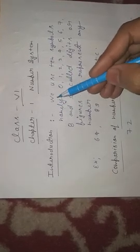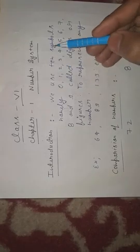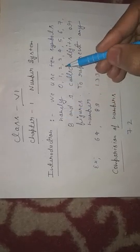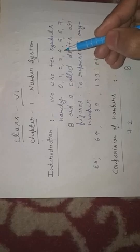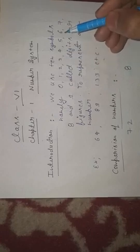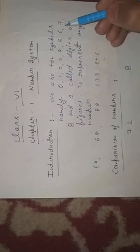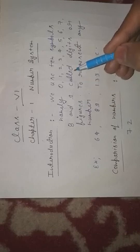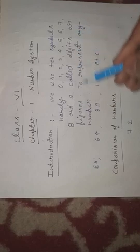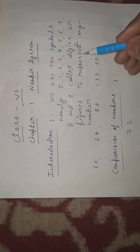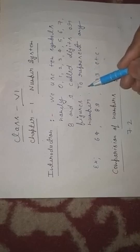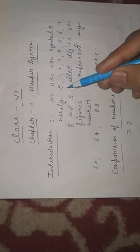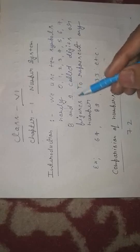As we know that we use 10 symbols, namely 0, 1, 2, 3, 4, 5, 6, 7, 8 and 9. As you know, they are called digits or figures. By using these 0 to 9, you can make any type of number.